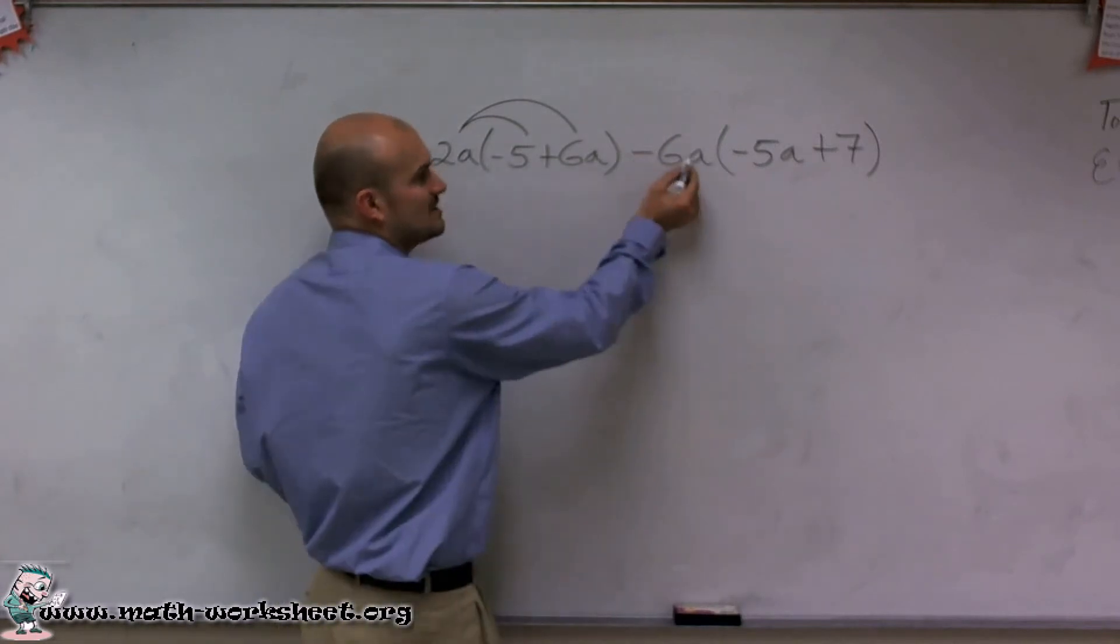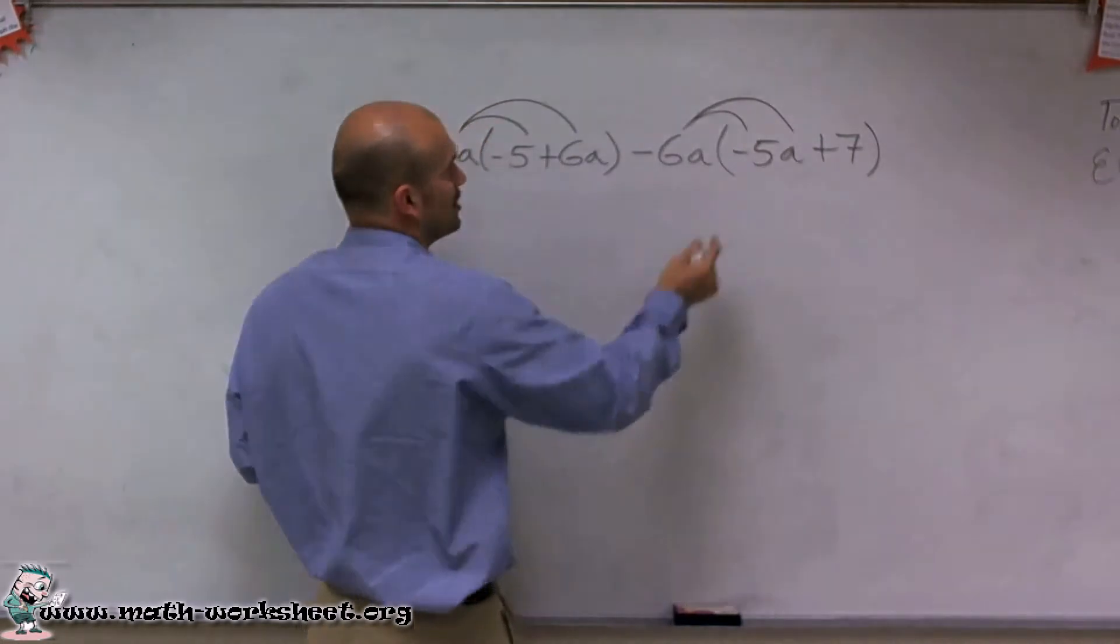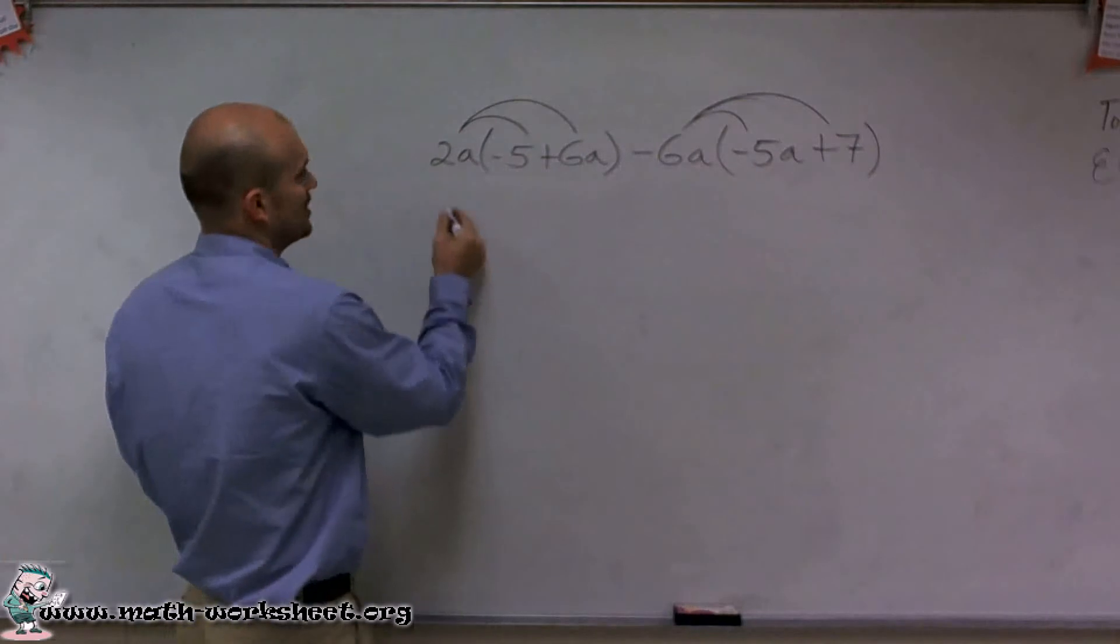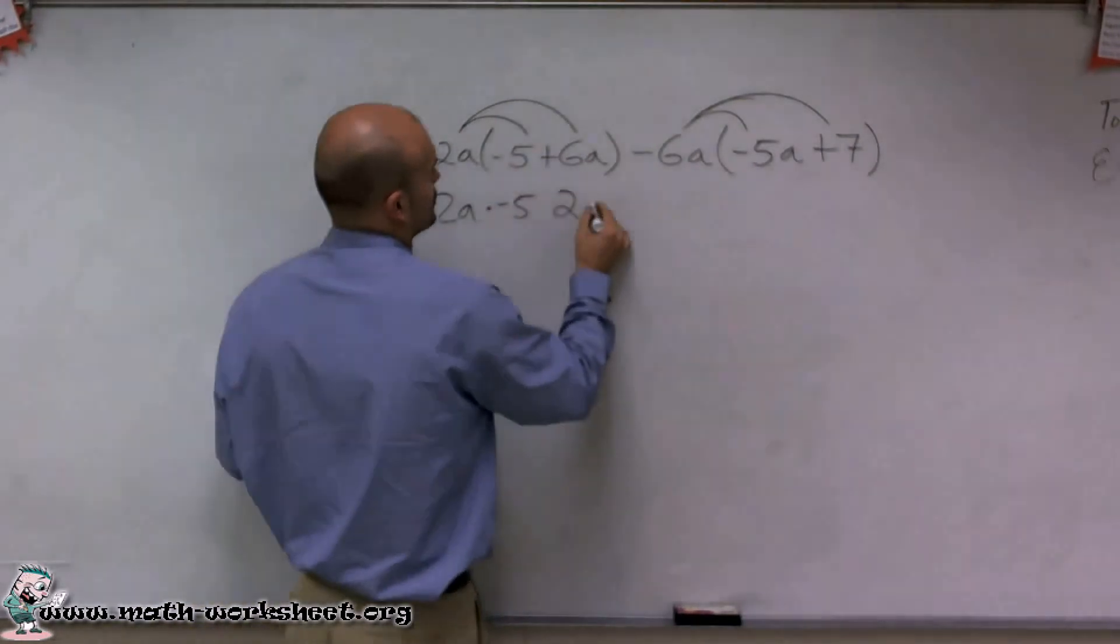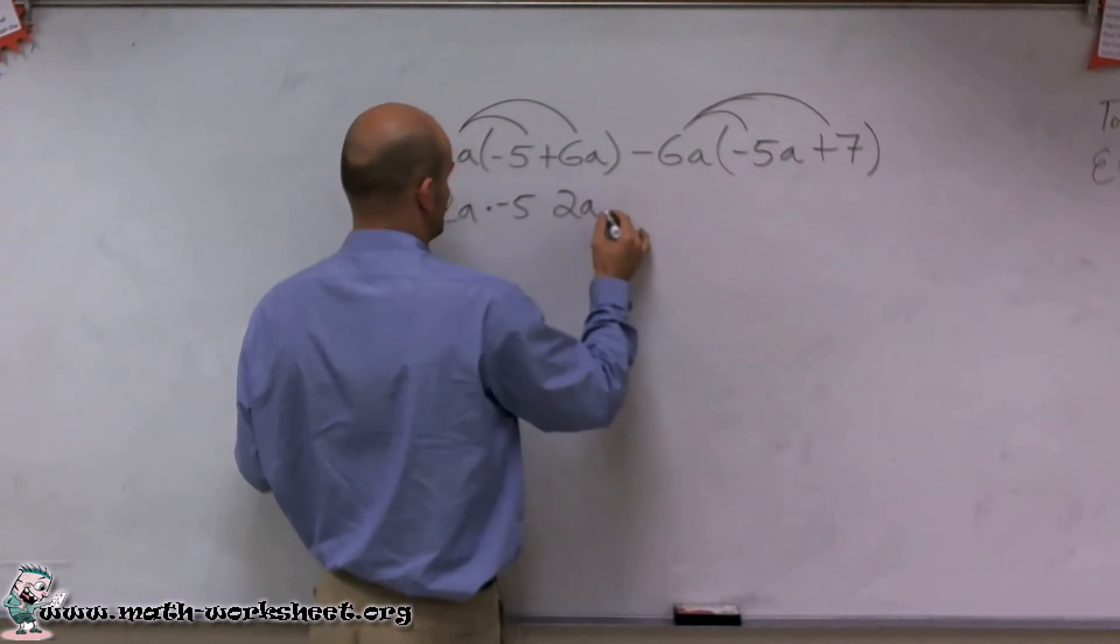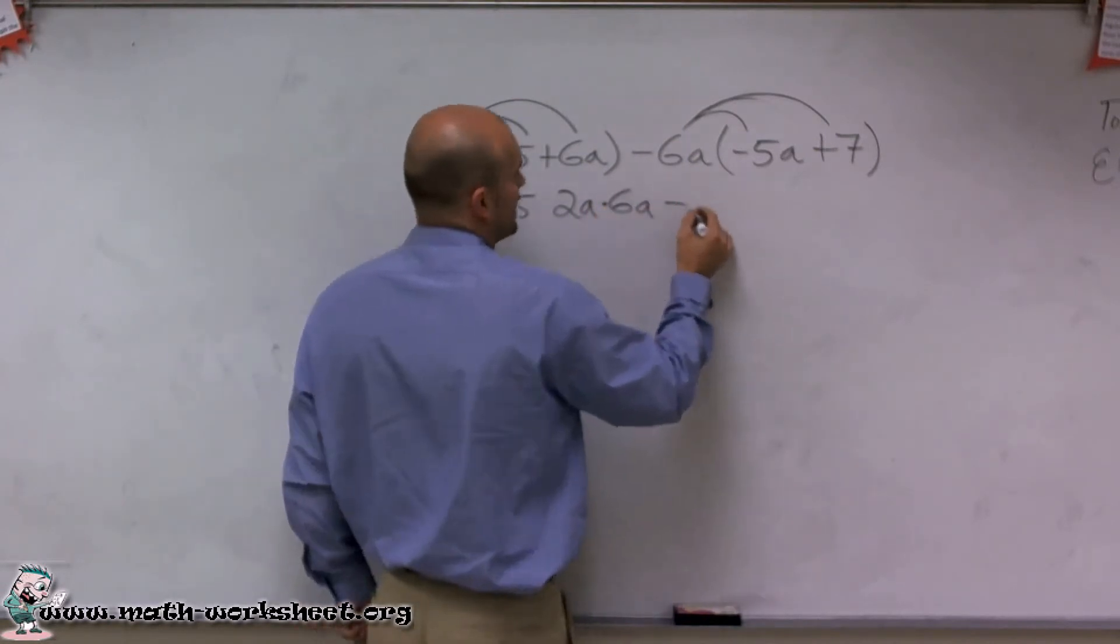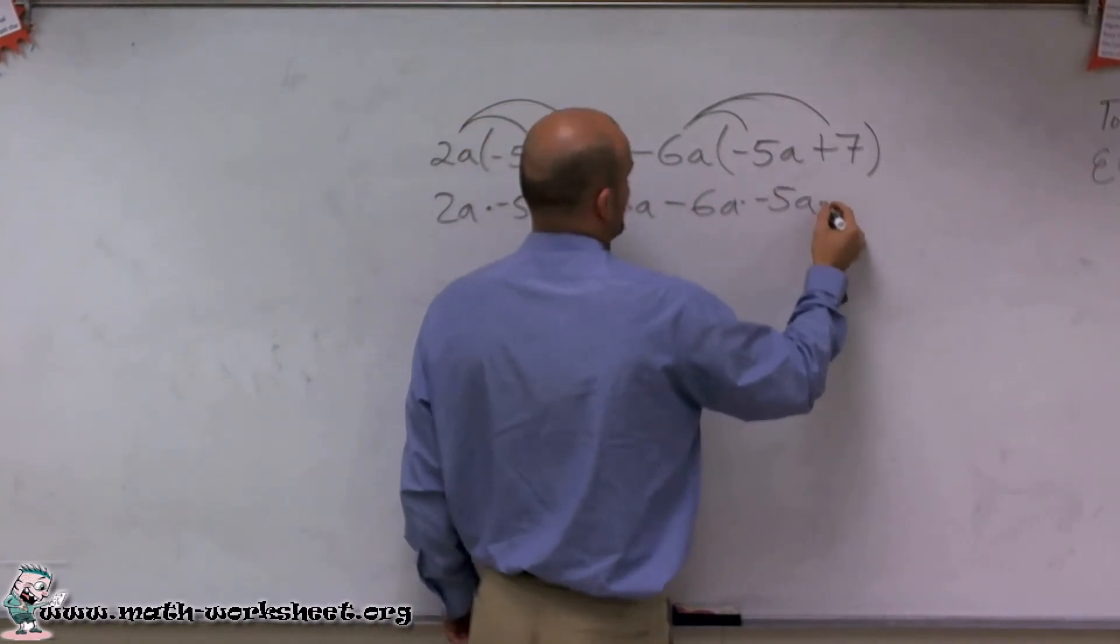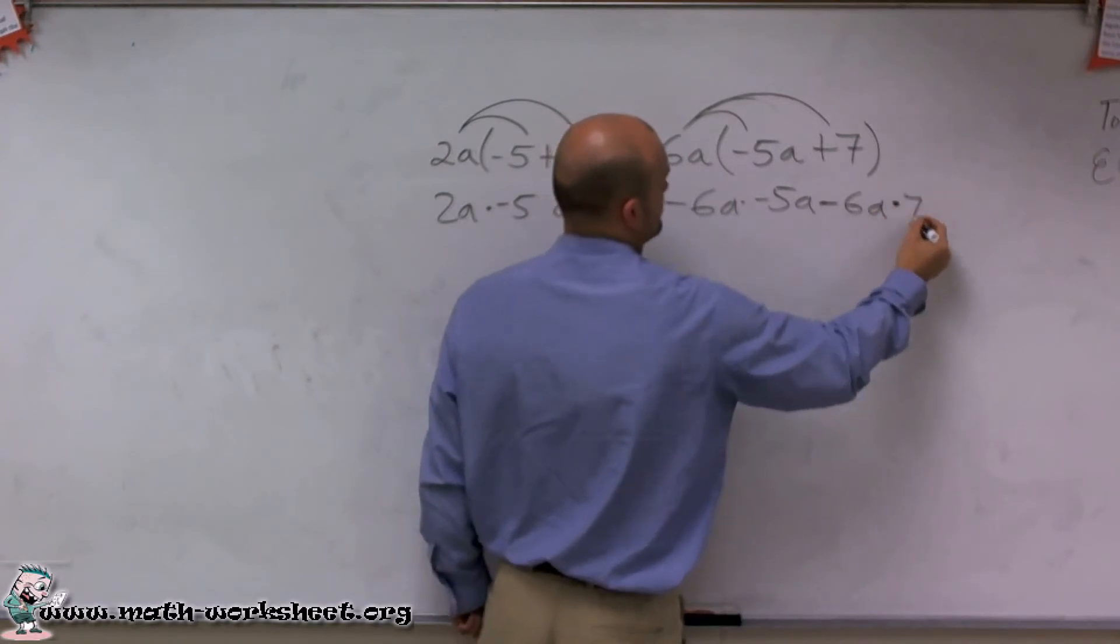Notice this 6a is negative. You've got to make sure when you multiply that you're multiplying negative 6a times negative 5a and negative 6a times 7. Therefore, I obtain 2a times negative 5, 2a times 6a, negative 6a times negative 5a, and negative 6a times 7.